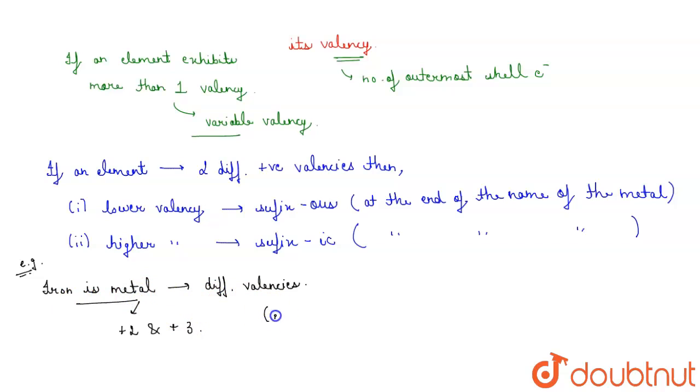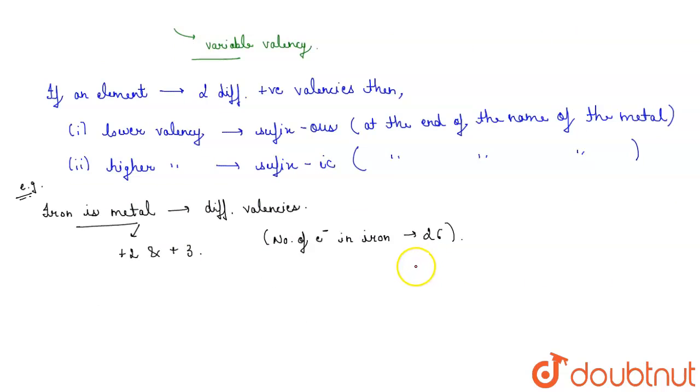Now the number of electrons in iron is 26. So like other metals, it has two electrons in the 4s orbital and four electrons in the 3d orbital.